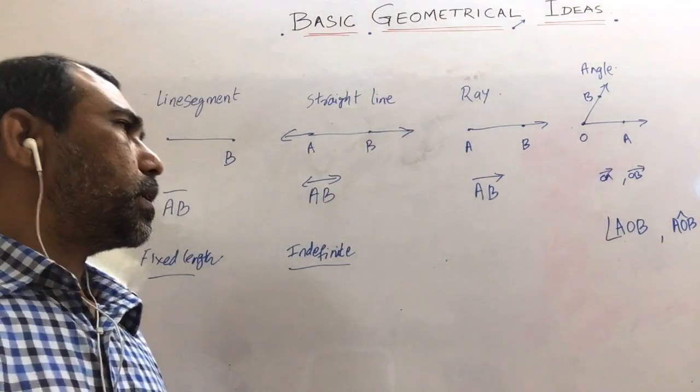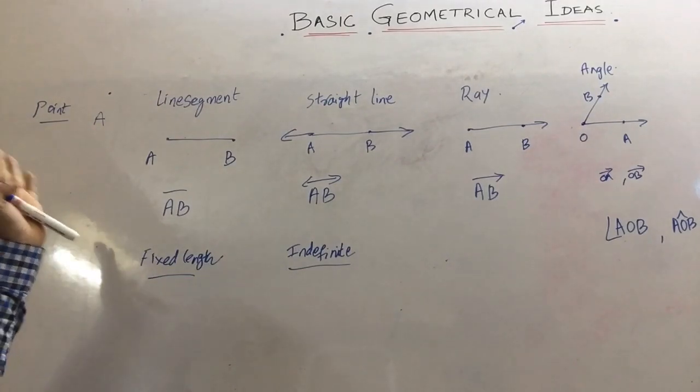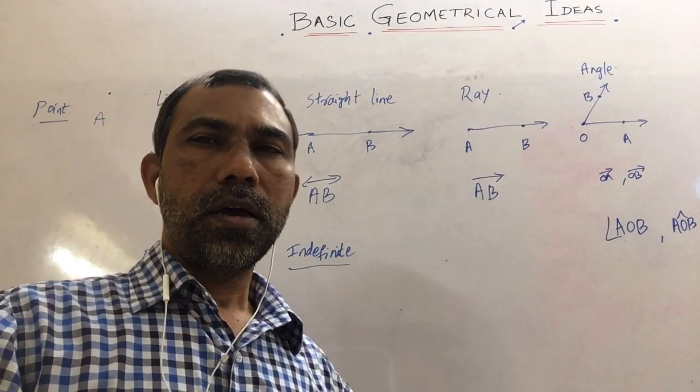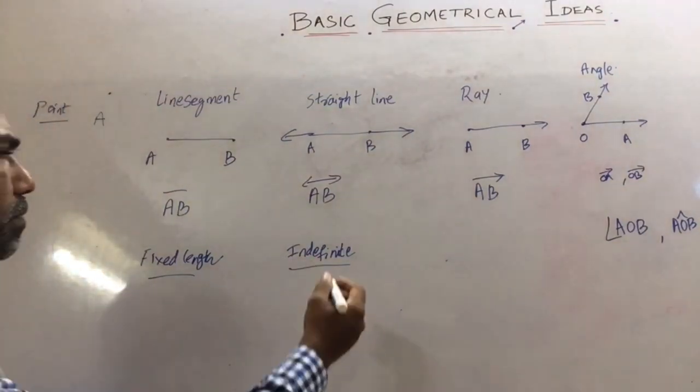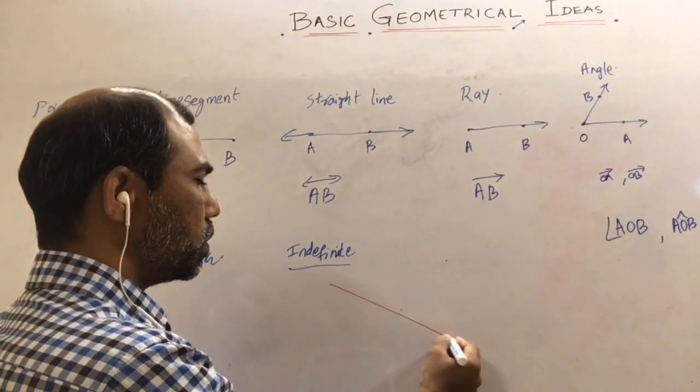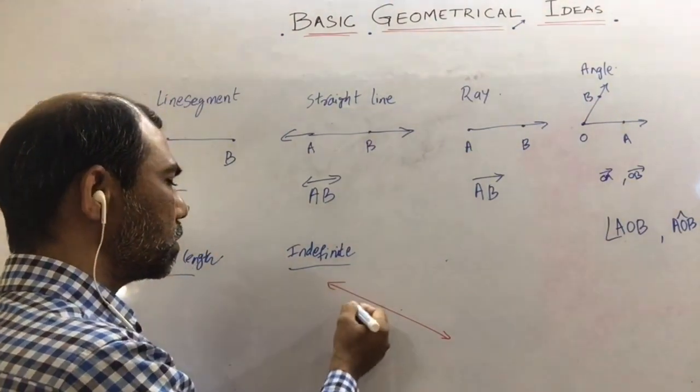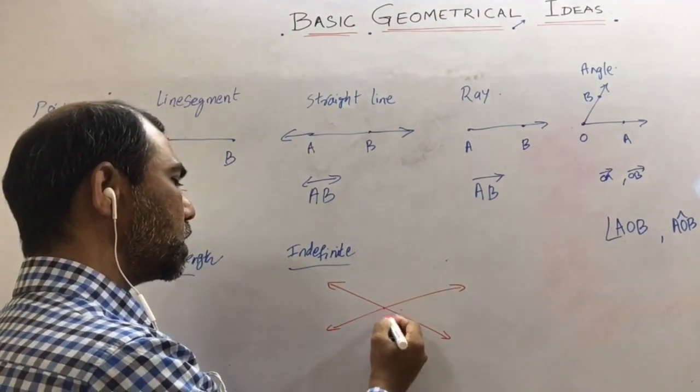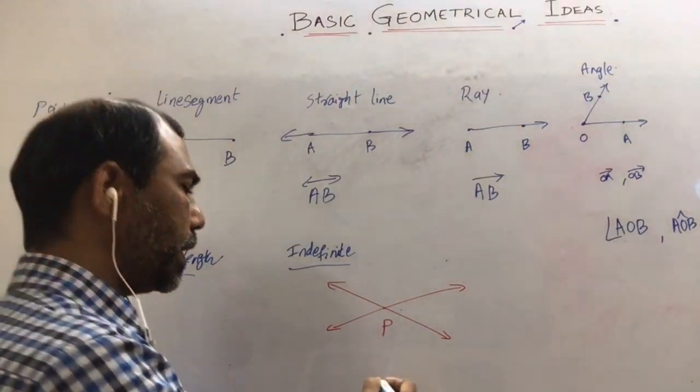Here we have discussed the different points like a point, line segment, straight lines, ray and angle. Here we have different types of lines. Suppose if you are drawing lines here and another line which is intersecting here and suppose it is meeting at this point P, these two lines are called intersecting lines.